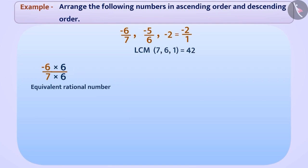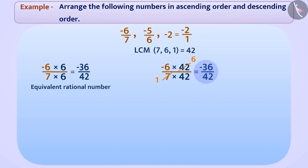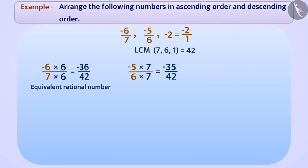By multiplying the numerator and denominator of minus 6 by 7 with 6, we get the equivalent rational number minus 36 by 42. For making the denominator 42, we multiply minus 6 by 7 with 42 by 42, write the denominator as 42, divide 42 by 7 to get 6, then multiply 6 and minus 6 to obtain the numerator minus 36. Similarly, the equivalent rational number of minus 5 by 6 is minus 35 by 42, and of minus 2 by 1 is minus 84 by 42. Since the denominators are equal, we can compare the numerators and arrange them in ascending order.